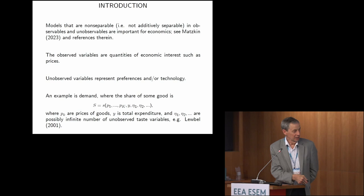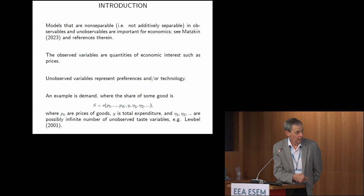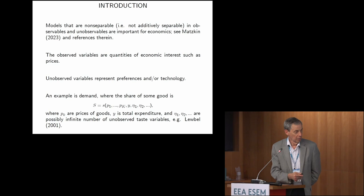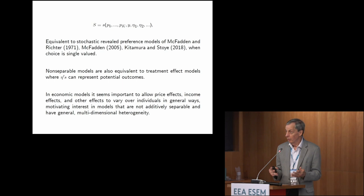We specify demand in terms of the expenditure share on a particular good — consistent with a long history in demand analysis. The share function depends on prices of that good and other goods, and also on income y. The prices are the p's, income is y, and then you have etas — possibly an infinite number — representing the unobserved heterogeneity: preferences parameterized by an infinite-dimensional vector.